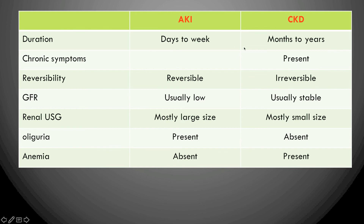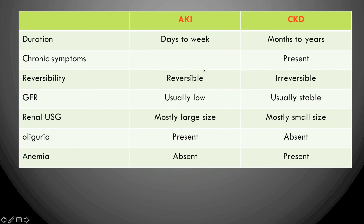Key differences between AKI and CKD: Duration — AKI lasts days to weeks; CKD lasts months to years, and the history alone helps distinguish them. Chronic symptoms are present only in CKD. Reversibility — AKI is mostly reversible, though the patient remains susceptible to future injury; CKD causes irreversible, progressive damage ultimately leading to kidney failure.